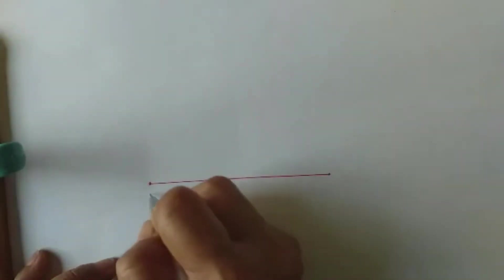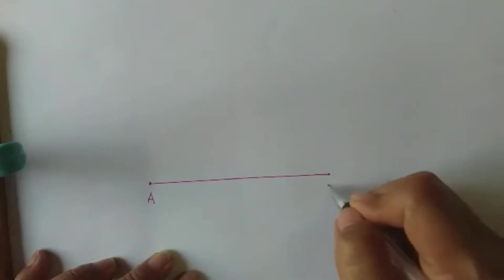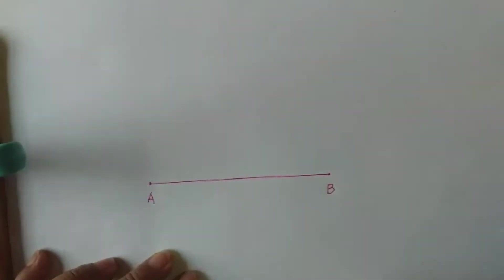Locate these points and name this point A and point B. These are the endpoints of line segment AB.